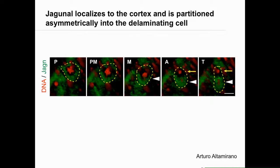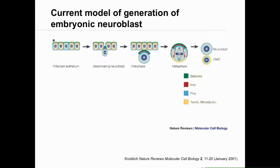Thanks to Lynn Cooley providing stocks, we were able to look at localization of Jaganol. We see Jaganol localized all around the cell cortex. As we enter prometaphase and metaphase, it starts to be partitioned asymmetrically, with one daughter cell getting more Jaganol than the other. We hypothesize that the cell getting Jaganol is the eventual cell that becomes the neuroblast, based on the positioning of its nucleus being slightly lower than the other — because neuroblasts delaminate from the epithelium to align along the apical-basal axis for asymmetric division, providing a GMC and a renewing neuroblast.